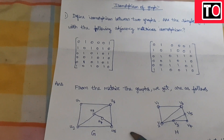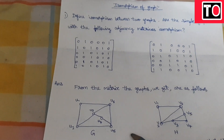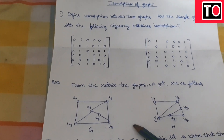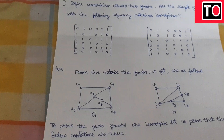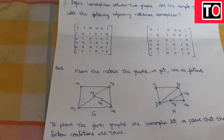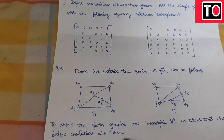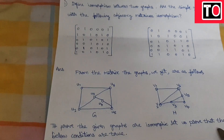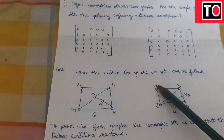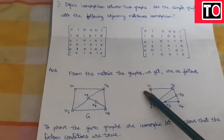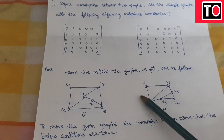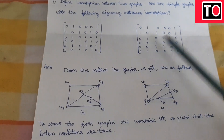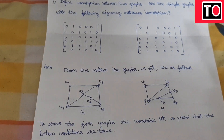Now we are going to show the two graphs and prove they are isomorphic using 3 steps. Let's prove that the given graph is isomorphic by verifying the following conditions. The first step is to prove equality of the number of vertices and edges.